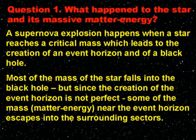Question number one: What happened to the star and its massive matter energy? A supernova explosion happens when a star reaches a critical mass, which leads to the creation of an event horizon and of a black hole. Most of the mass of the star falls into the black hole, but since the creation of the event horizon is not perfect, some of the mass or matter energy near the event horizon escapes into the surrounding sectors.